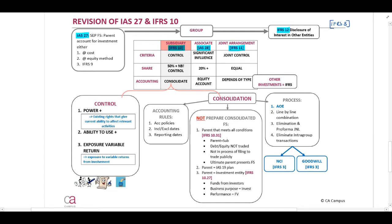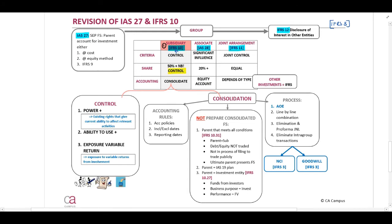Now let's quickly have a look at the different types of investments. There are subsidiaries. The criteria that we use to distinguish the type of investment will be control. Control will be explained in detail in IFRS 10. When we look at the shares, normally this should be 50% or more, but most importantly, there should be control.